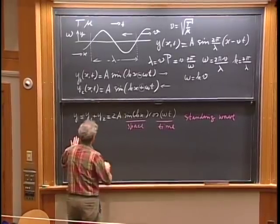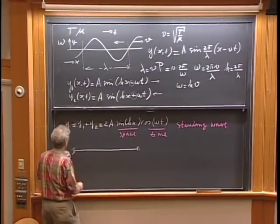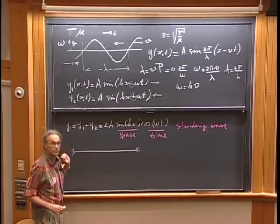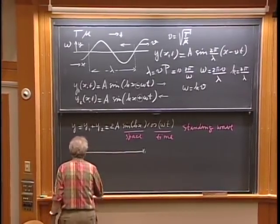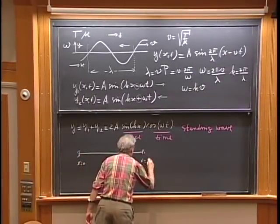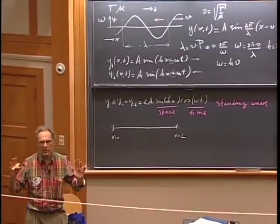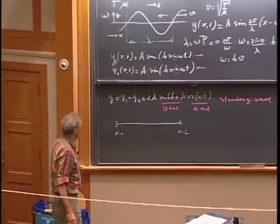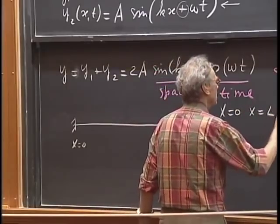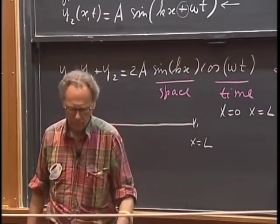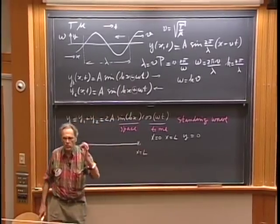Now I'm going to make the string fixed at both ends. At x equals zero and at x equals L, I have boundary conditions: Y cannot be anything but zero, because the string is fixed. The only way to satisfy this is to allow only certain values for k to exist.